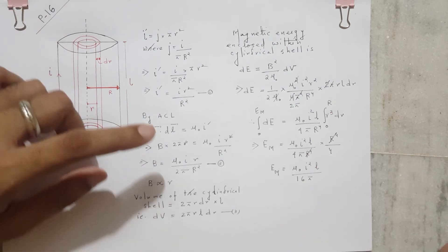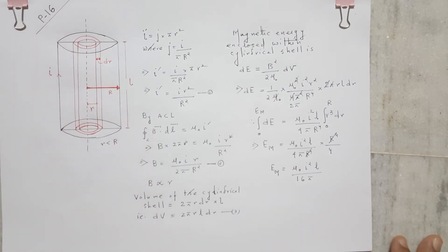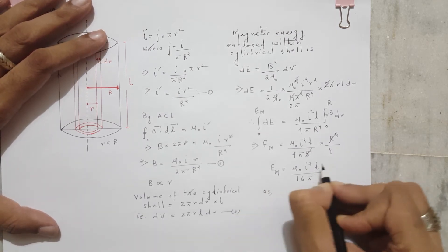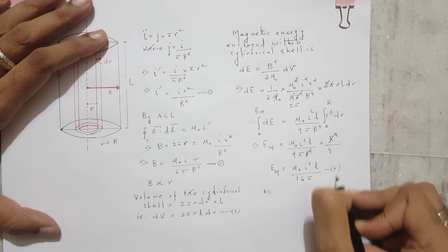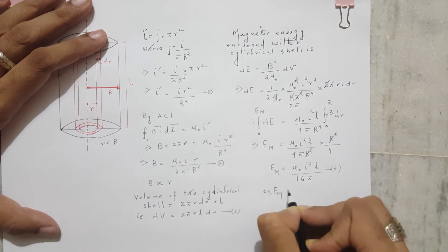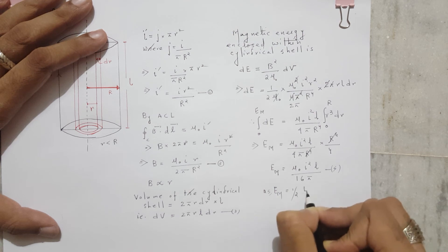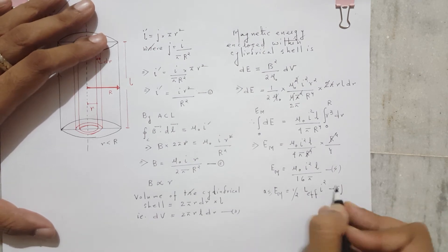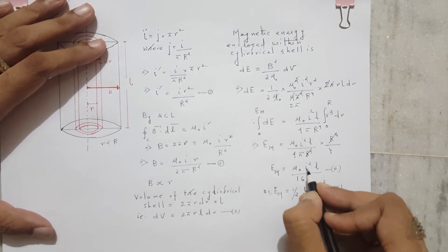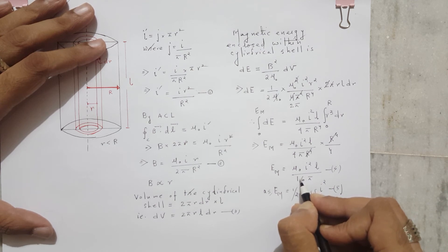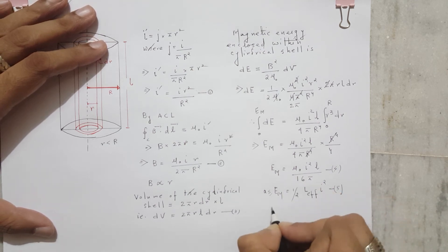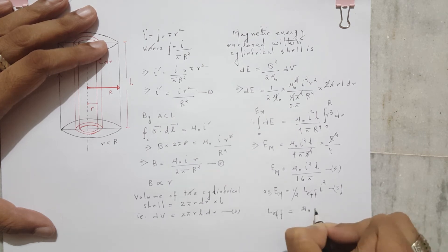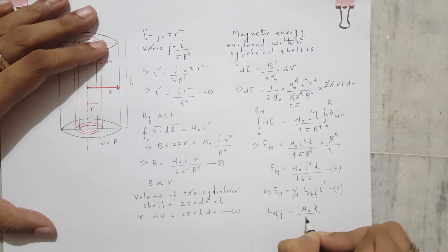We know that magnetic energy E = ½·L_eff·I². Comparing this with our result E_M = μ₀I²L/(16π): the I² terms cancel, and comparing the numerical factors (2 and 16 give 8), we therefore get L_eff = μ₀L/(8π). That is the answer for the self-inductance of the wire due to internal flux.